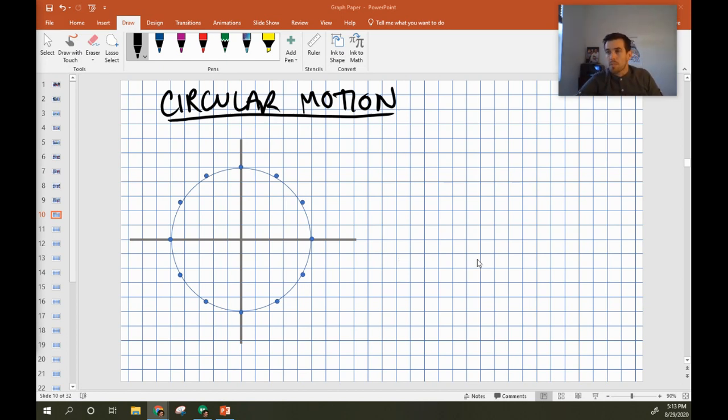Okay, so with circular motion, I'm going to deal with the simplest case right now, which is when an object is moving at a constant speed, but moving in a circle.